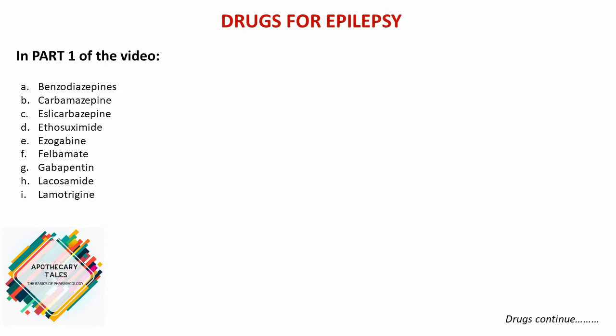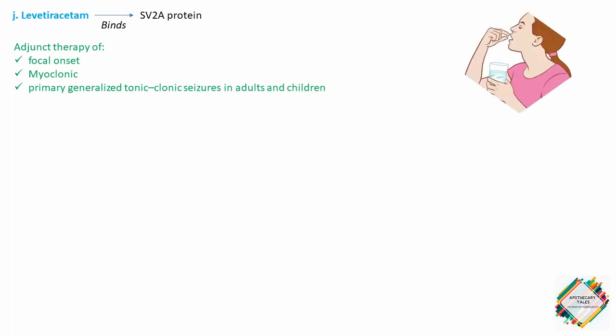The next drug is levetiracetam. The exact mechanism of anticonvulsant action is unknown, and it demonstrates high affinity for a synaptic vesicle protein, SV2A. This protein is responsible for regulating neurotransmitter release, so when this drug binds to this protein, the chances of neurotransmitter being released is reduced. This is mainly used for adjunct therapy of focal onset, myoclonic seizures, and primary generalized tonic-clonic seizures in adults and children. The drug is usually well absorbed orally and excreted in urine mostly unchanged, resulting in few to no drug interactions. Levetiracetam can cause mood alterations that may require dose reduction or a change of medication.